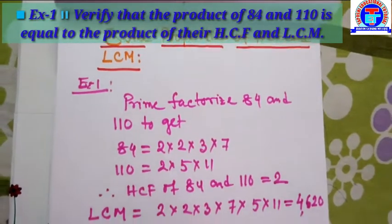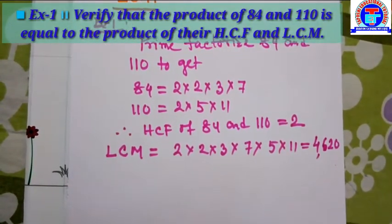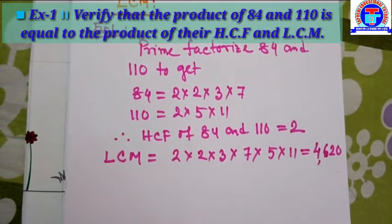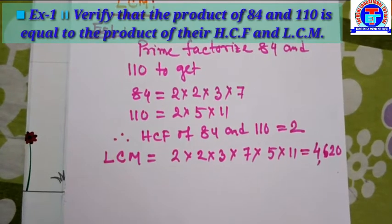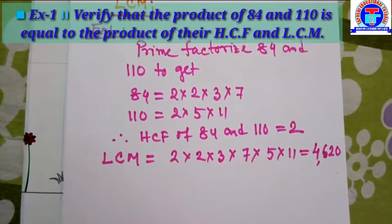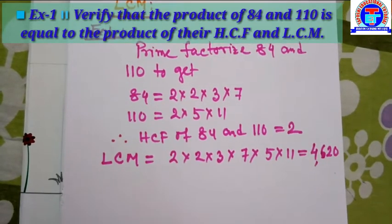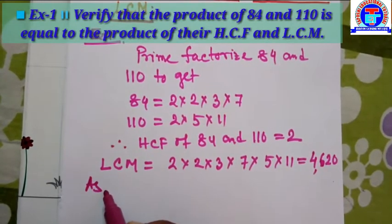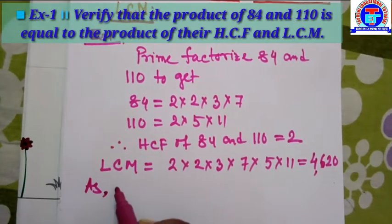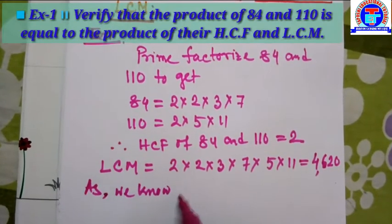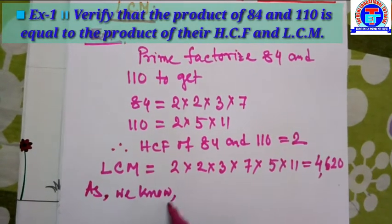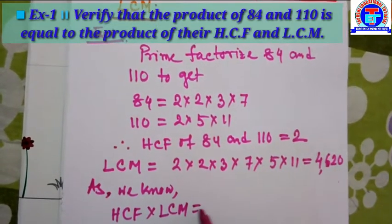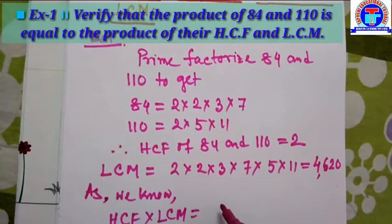Now we use formula A. As you know, for any two numbers, HCF into LCM is equal to the product of the two numbers. We apply that formula here. HCF into LCM is equal to the product of the two numbers.